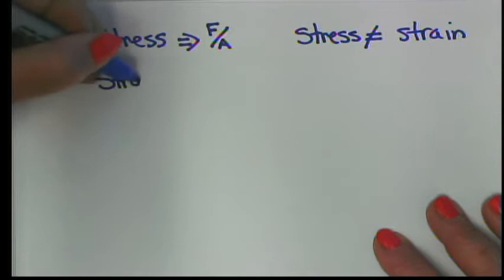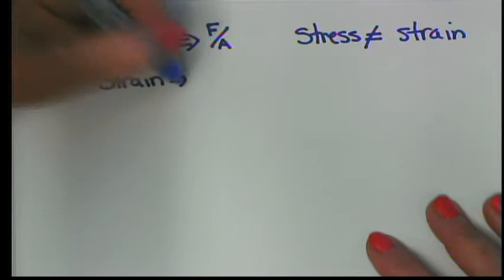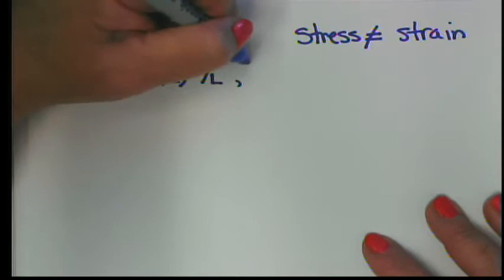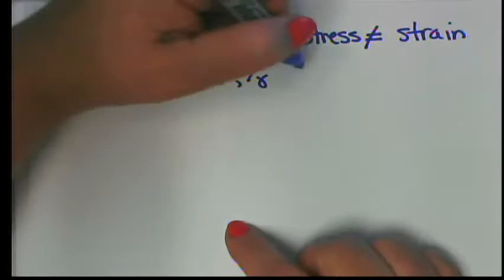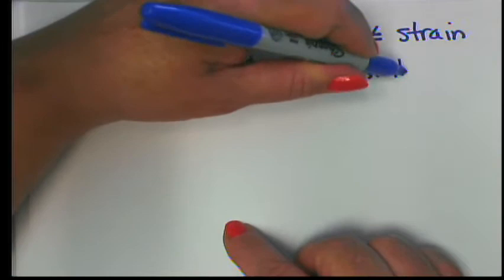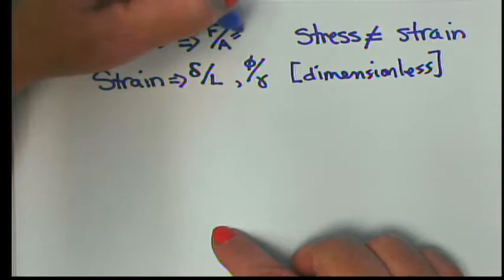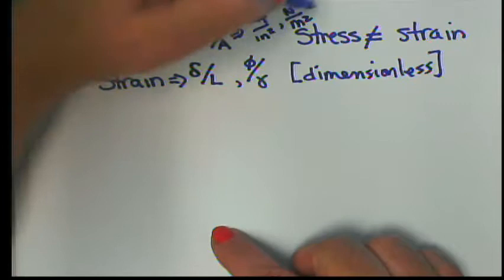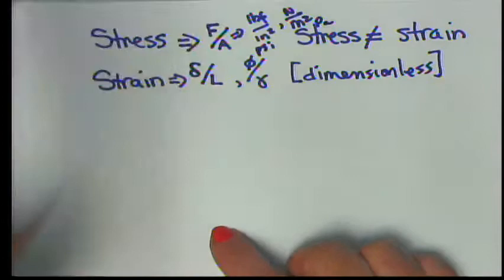Stress is a force over an area, and strain is a change in a length or an angle based on an applied or responsive load. We write strain as delta over L, or an angle over another angle. Strain is dimensionless. Stress is in units of force per area, such as pounds per inch squared (psi) or newtons per meter squared (pascal).